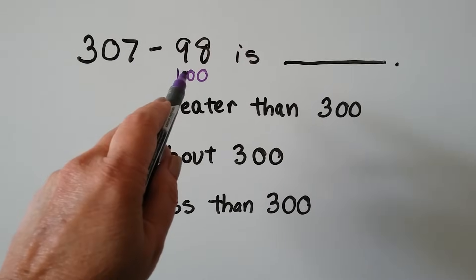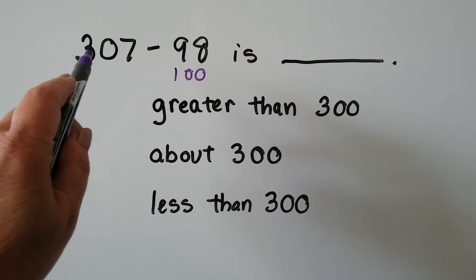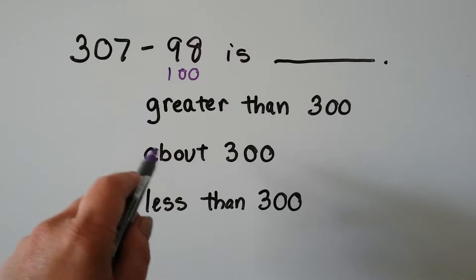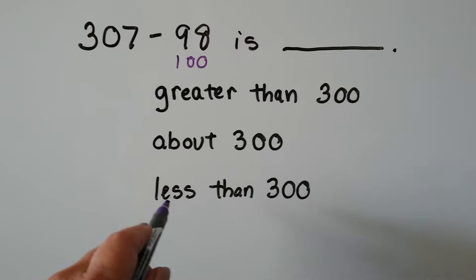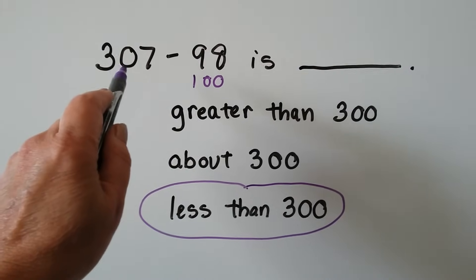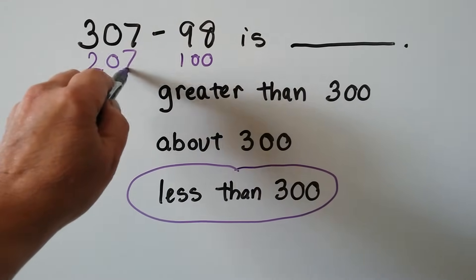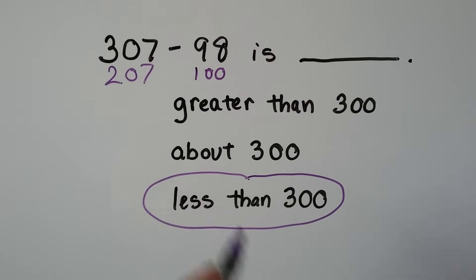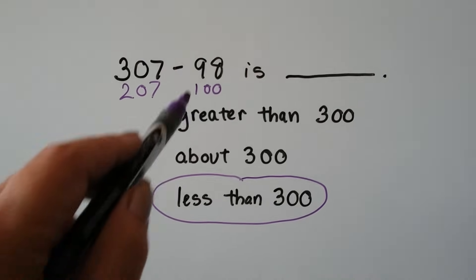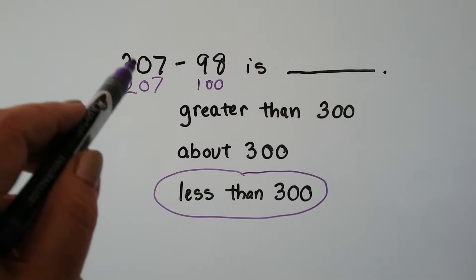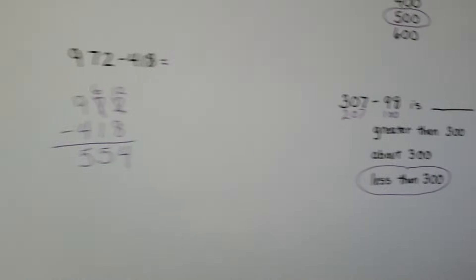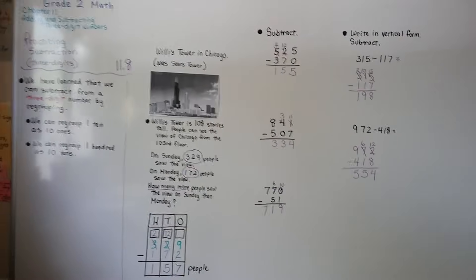307 take away 100 would be 207. That's not greater than 300, and 207 is not about 300 either — 207 is less than 300. Because 98 is so close to 100, we can say we're taking about 100 away, leaving about 207. So the answer is less than 300. When a number is very close to another place value, we can round it and get pretty close to the right answer.